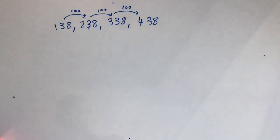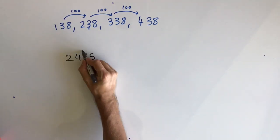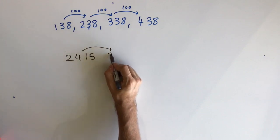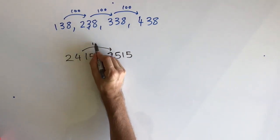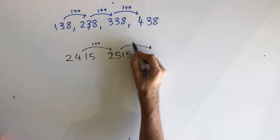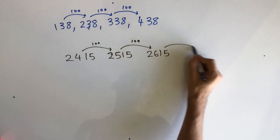Let me show you a different example. 2415, 2515, 2615, 2715.